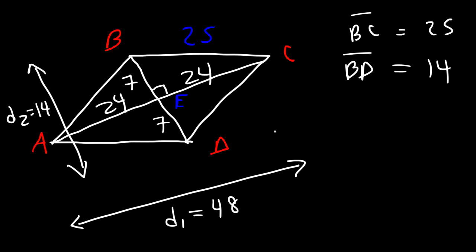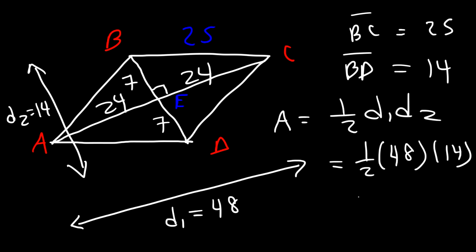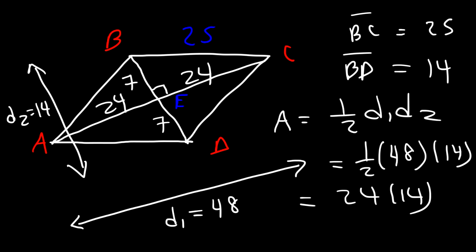The area equals one-half times D1 times D2: one-half times 48 times 14. Half of 48 is 24, and 24 times 14 is 336. So the area of this rhombus is 336 square units. Now you know how to calculate the area of a rhombus.